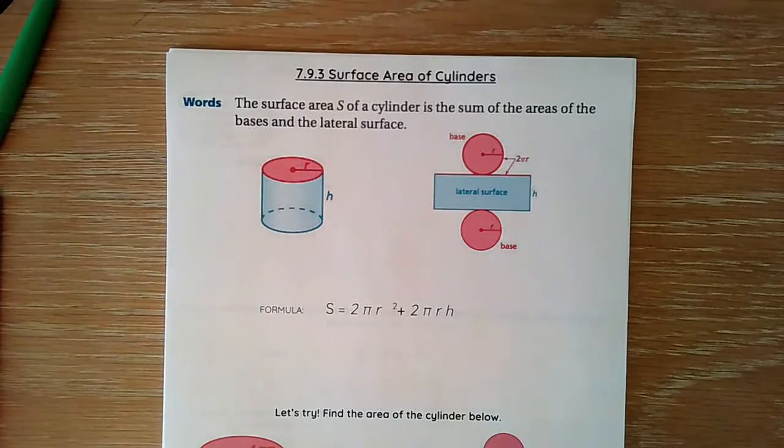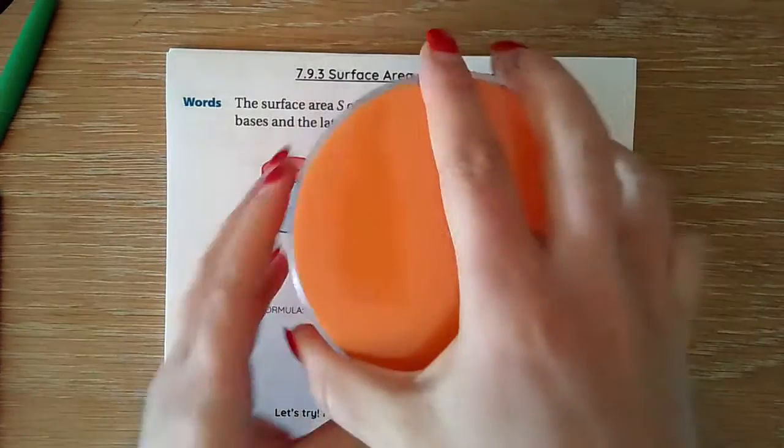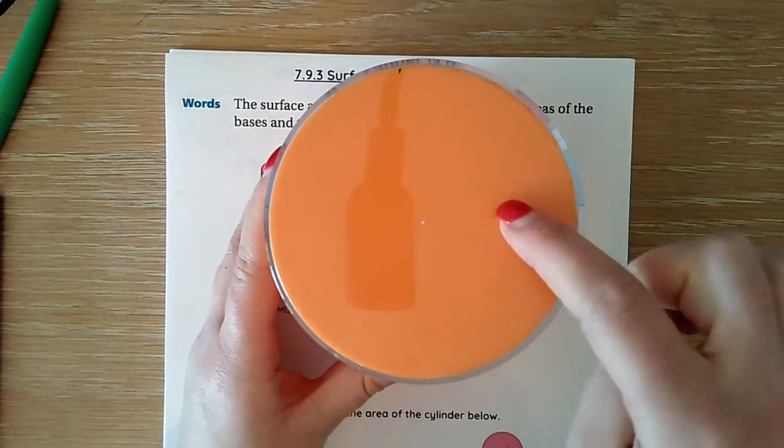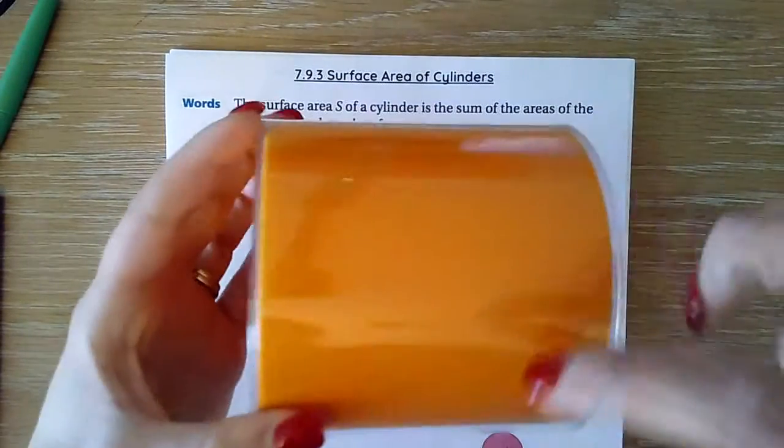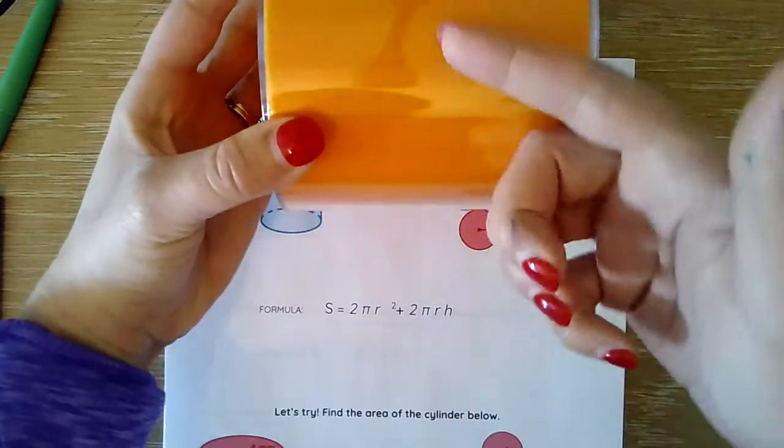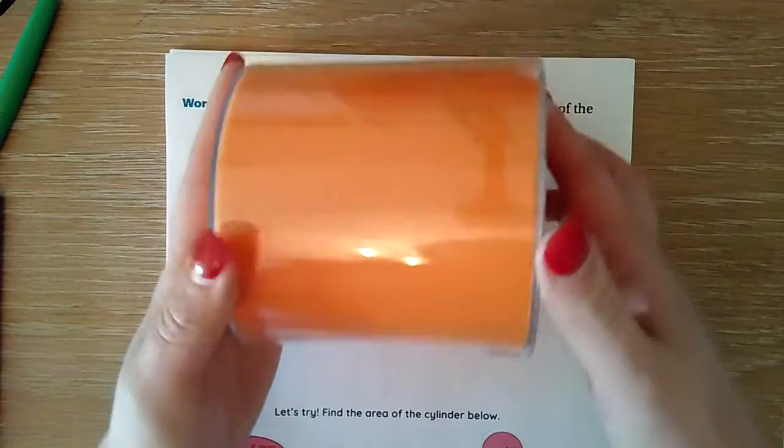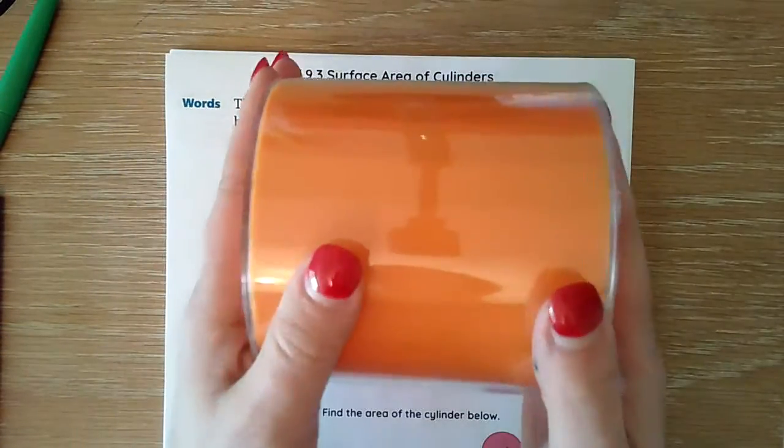Today we are going to find the surface area of a cylinder. We already know that a cylinder has two circular bases that are identical, and around it, your cylinder, it's a rectangular shape.